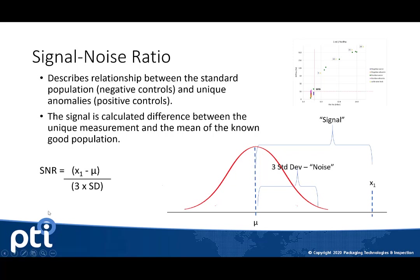The signal-to-noise ratio is calculated as the difference between the test result from a defect and the average result of good samples, divided by three times the standard deviation of the good samples. The signal-to-noise ratio captures standard deviation and looks at the difference between the two populations. It really encompasses everything we need to achieve in an inspection method.